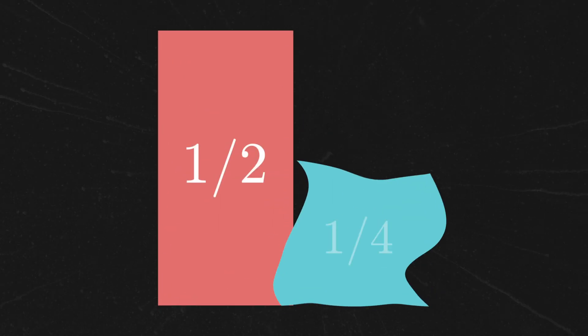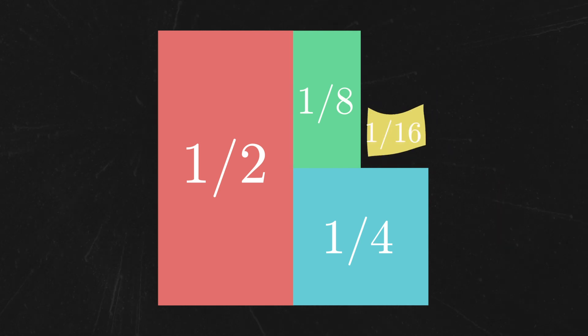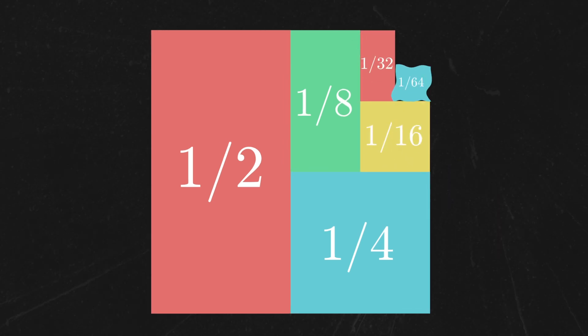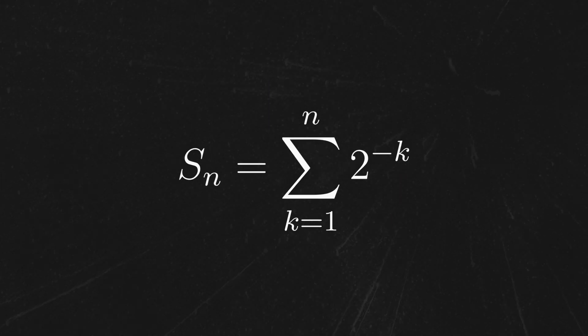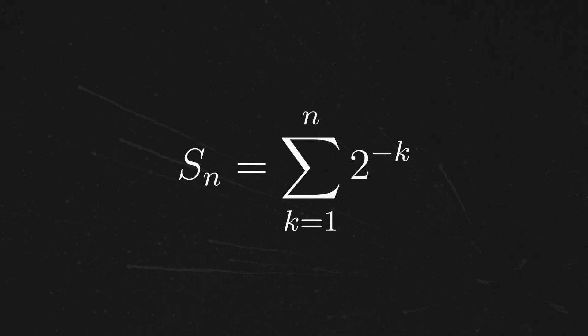Meanwhile, if you've worked with infinite series before, you've probably come across the fact that 1/2 plus 1/4 plus 1/8 and continuing to add the inverses of powers of 2 ad infinitum will sum up to 1. We can express this in terms of a sequence by defining S_n to be the nth partial sum. That is, S_n is going to be the sum where we simply stop when we get to 1 over 2 to the power of n.